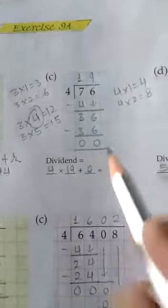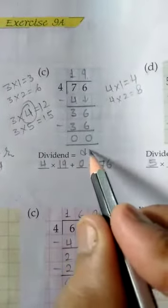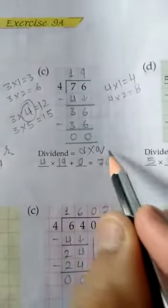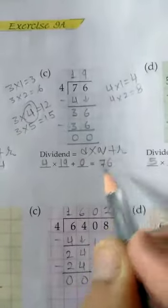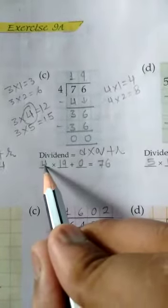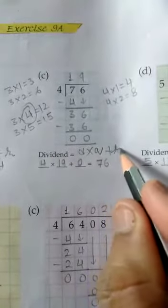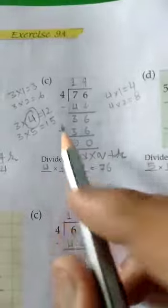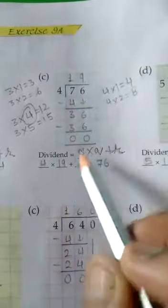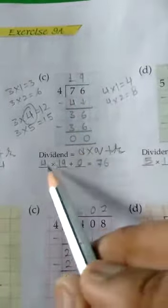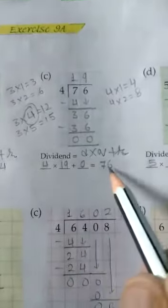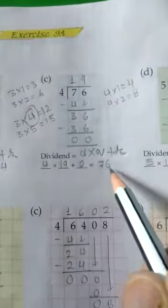Dividend equals divisor multiplied by quotient plus remainder. Divisor is 4, quotient is 19, and remainder is 0. So 4 multiplied by 19 plus 0 is equal to 76. Correct.